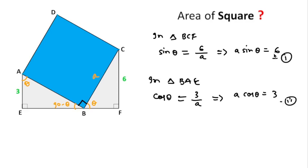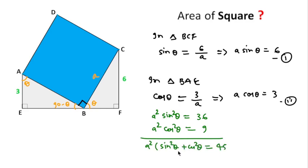If we square both sides in first, then we can write a squared sin squared theta equals 36. And if we square second equation both sides, then we can also write a squared cos squared theta equals 9. And if we add both, then a squared we will take common. Here sin squared theta plus cos squared theta equals 45.